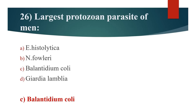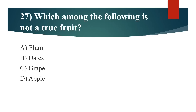27th question: Which among the following is not a true fruit? Option A: Plum. Option B: Dates. Option C: Grape. Option D: Apple. Answer is Option D: Apple.